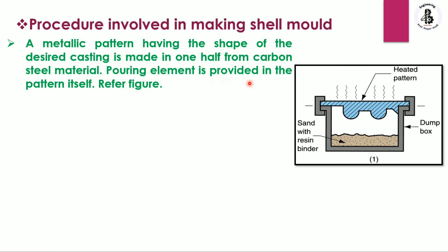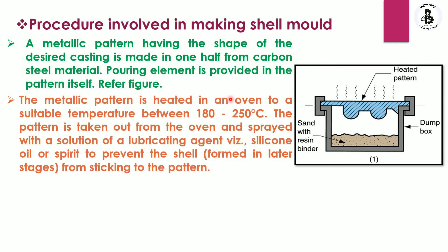Pouring elements are provided in the pattern itself. The metallic pattern is then heated in an oven to a suitable temperature range between 180 to 250 degrees centigrade. The pattern is then taken out from the oven and sprayed with a solution of lubricating agents like silicone oil or spirit to prevent the shell from sticking to the pattern.